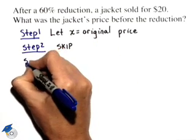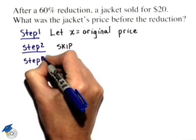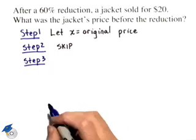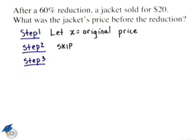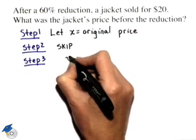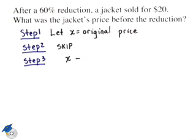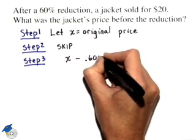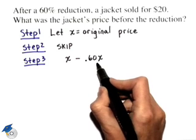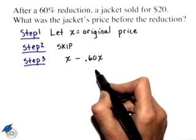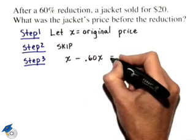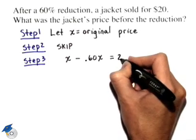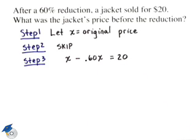In step 3, we write an equation. Let's start with the original price of the jacket, x, and subtract the discounted amount. There was a 60% reduction, so we're subtracting 0.60 times x. That's 60% of x, the original price, and that equals the price after the reduction of $20.